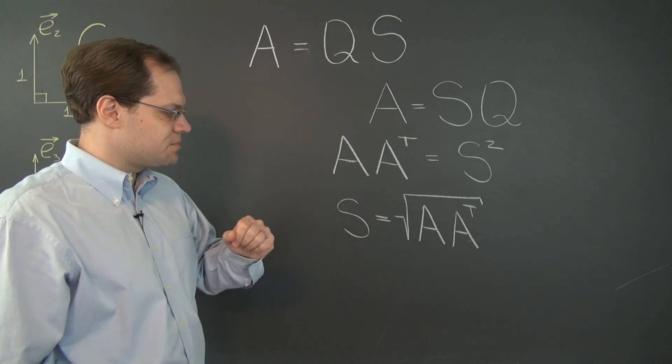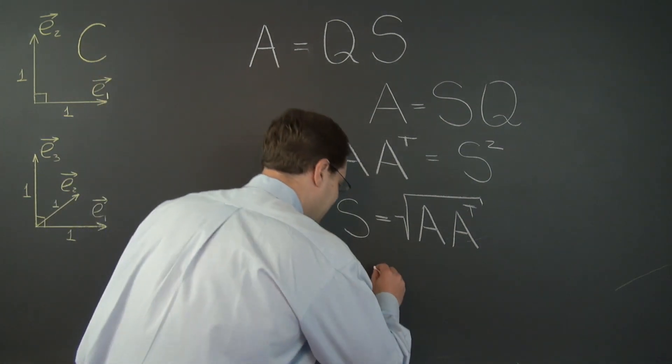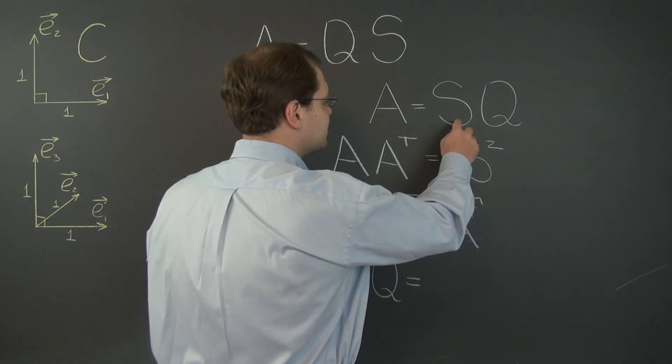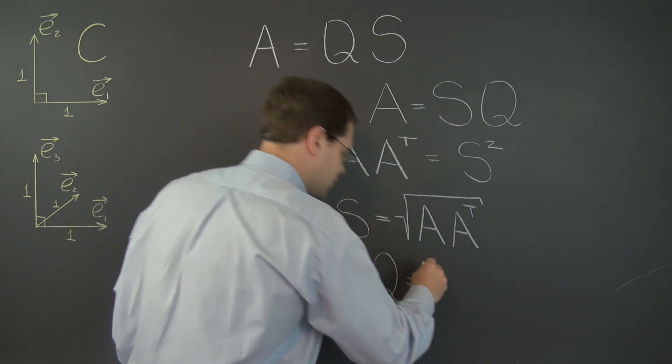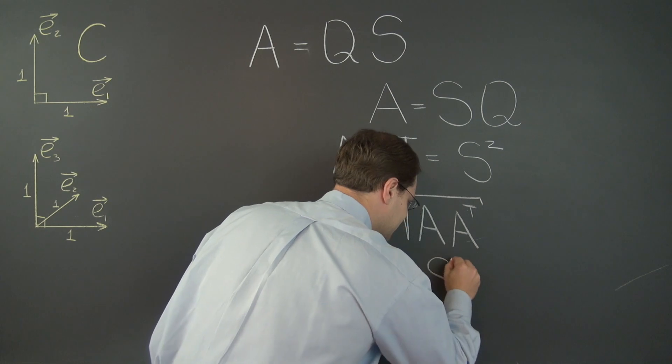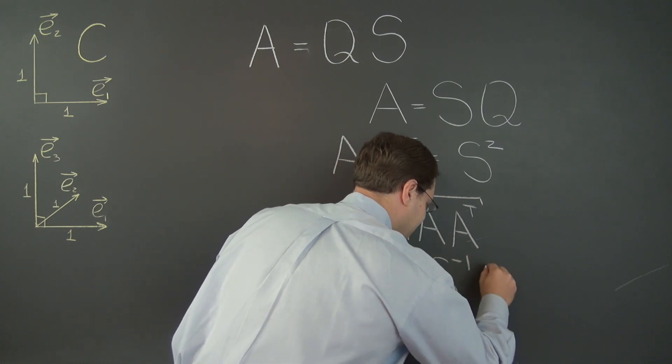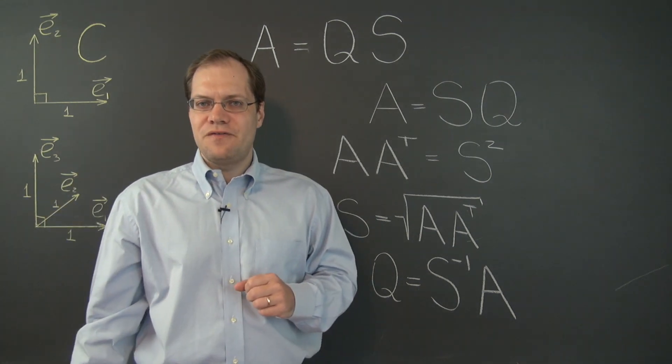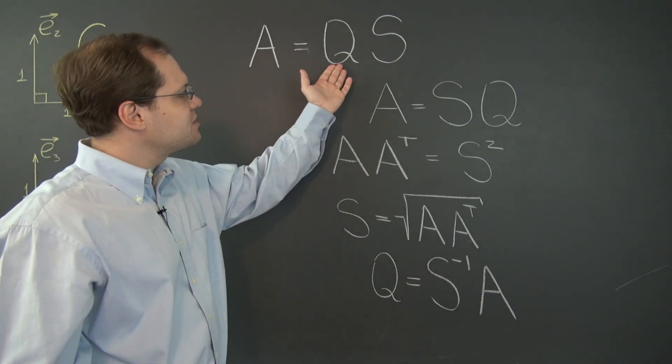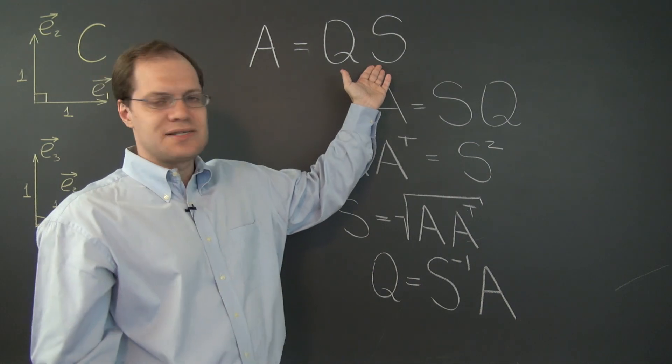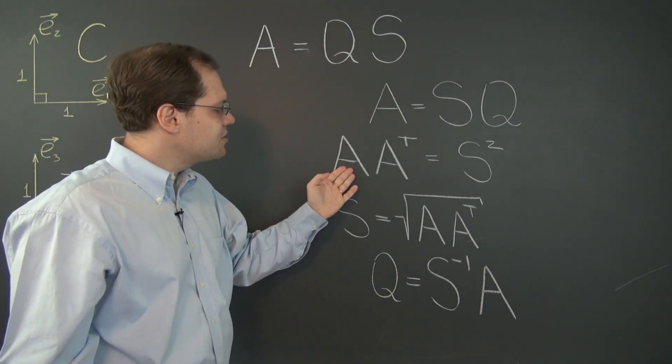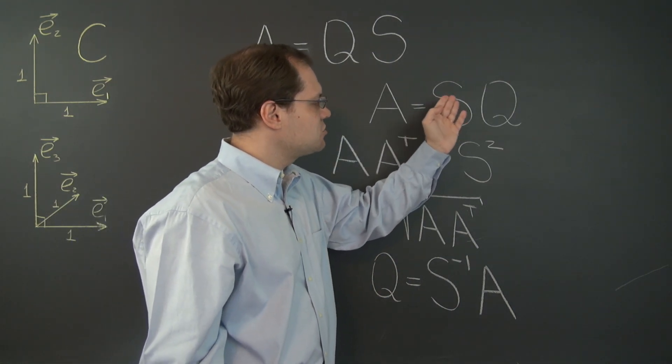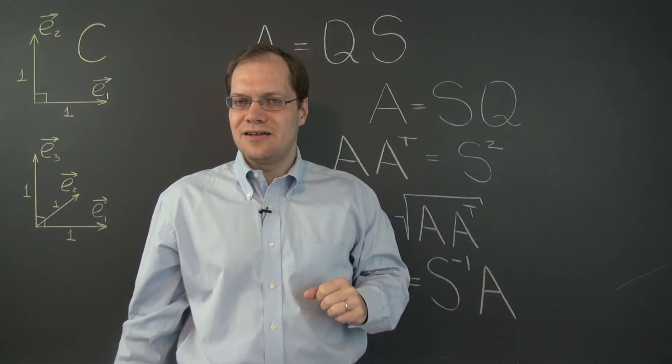So this will be a symmetric matrix S and once we have our matrix S the matrix Q will of course be just S inverse A. So everything went perfectly smoothly just as before and whereas before we obtained an orthogonal matrix times a symmetric matrix, considering A A transpose instead will yield a symmetric matrix times an orthogonal matrix.